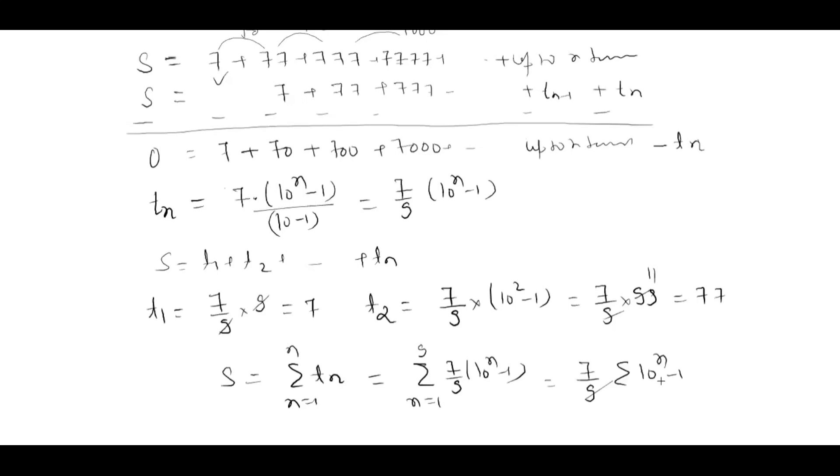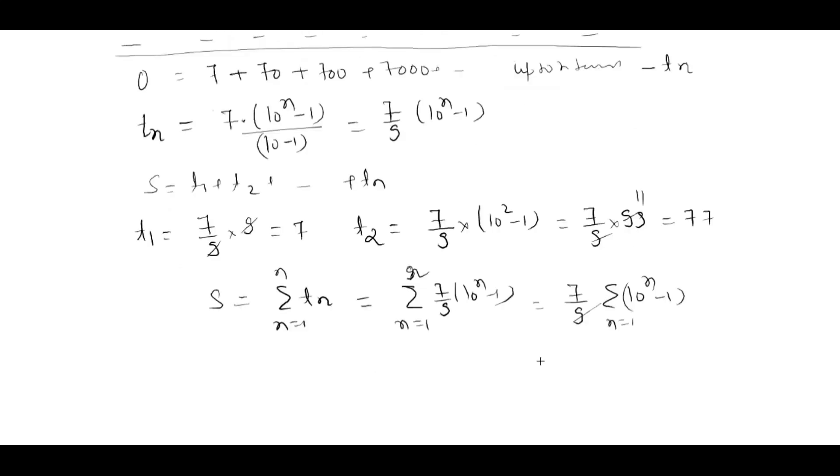n equals 1 to n. Then I'll take 7 by 9 and write this as sigma 10 to the power n minus sigma 1, n equals 1 to n. 10 to the power n is basically a GP because if I put n equals 1, this will be 10, 10 squared plus 10 cubed, and this will go up to 10 to the power n.